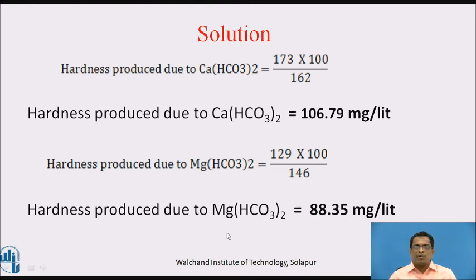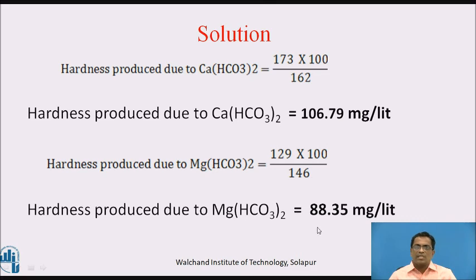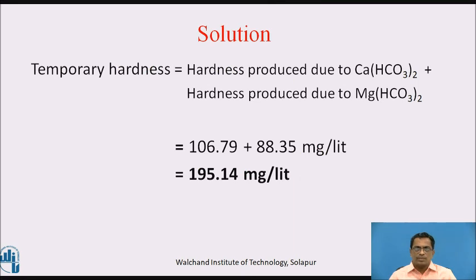Following the same procedure: hardness due to calcium bicarbonate = 173 × 100 ÷ 162 = 106.79 mg/L. Hardness due to magnesium bicarbonate = 129 × 100 ÷ 146 = 88.35 mg/L. Temporary hardness = 106.79 + 88.35 = 195.14 mg/L.